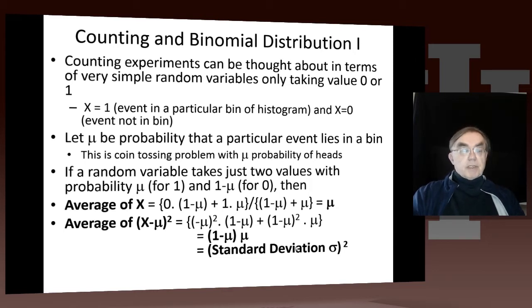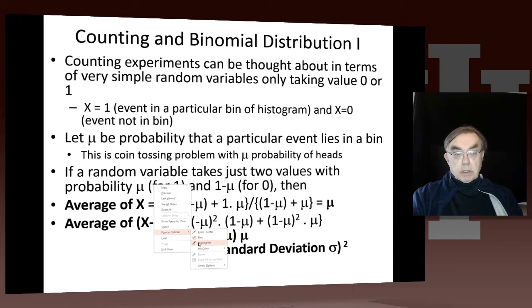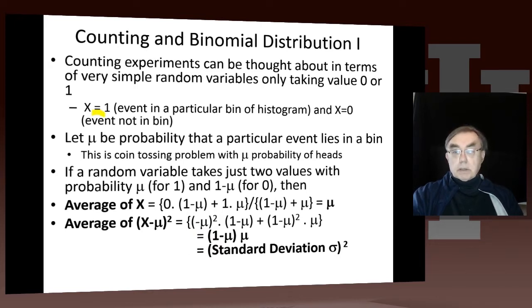Historically, these first came up with tossing coins - they're either heads or tails, that's effectively zero or one. We've already pointed out many times that the histogram case is that x equals one when the particular event is in a histogram bin, and x equals zero when it is not.